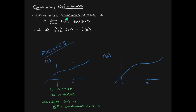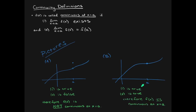That means the limit exists, so the first condition is true. However, f of a is this dot way up here, and f of a is not the same as the height of the left and right limits, so condition two is false. This function is not continuous at x equals a. In example b, conditions one and two are both true, so this one is continuous.